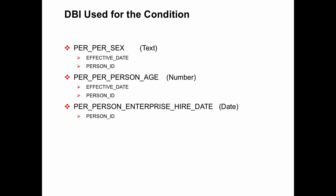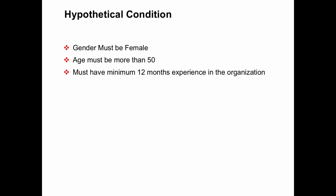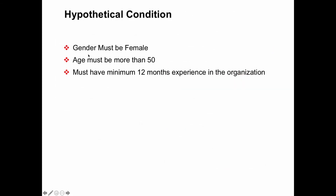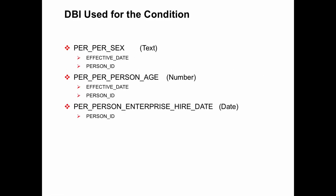Before we end this session, let me explain how the database items are working. We already saw in a previous session that the context decides what Fast Formula database item has to be used. In this case we are using three Fast Formula items: one uses effective date and person ID, one uses effective date and person ID, and one also uses person ID. All three require person ID and effective date as contexts. As long as these two are supported by the formula type, the database items can be used.